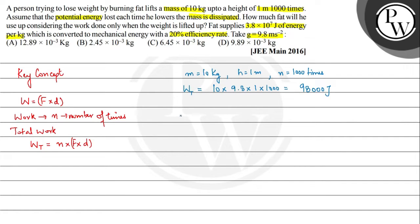On the other side, we have how much energy is given by the fat supply, that is equal to 3.8 × 10^7 joules of energy per kg. We have the total amount of, let us suppose, x kg burned.